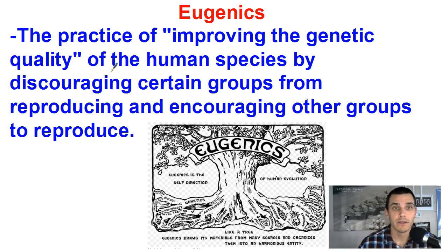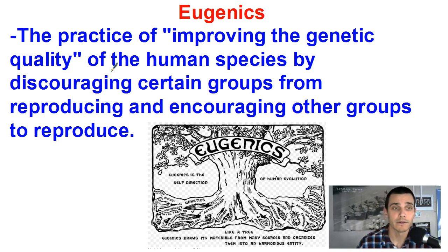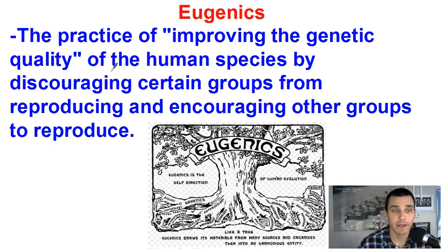One thing we need to know is called eugenics — the practice of, quote-unquote, improving the genetic quality of the human species by discouraging certain groups from reproducing and encouraging other groups to reproduce. So eugenics means trying to control who reproduces together to produce the best possible human specimens. We think about eugenics in sci-fi movies like Gattaca, but back in the progressive era, the early 1900s, there were prominent politicians who supported this policy of eugenics, even in the United States.